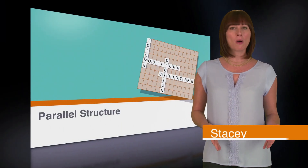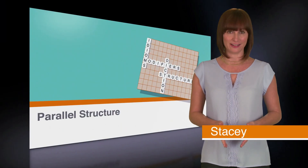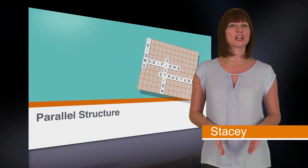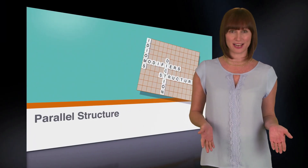In math lessons, we go over parallel lines and how they move along in the same direction without intersecting. Well, the same concept applies to grammar. You can't switch back and forth between nouns and verbs or between verb tenses when you're describing a series of thoughts. Inconsistency interrupts the flow of your sentence and can be confusing. And worst of all, it'll cost you points on the SAT.